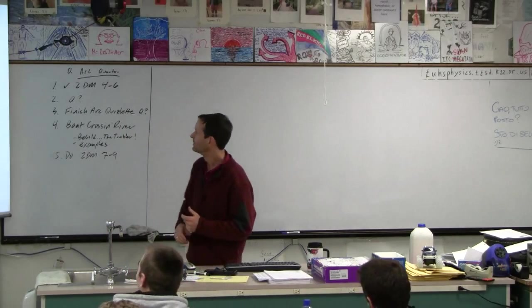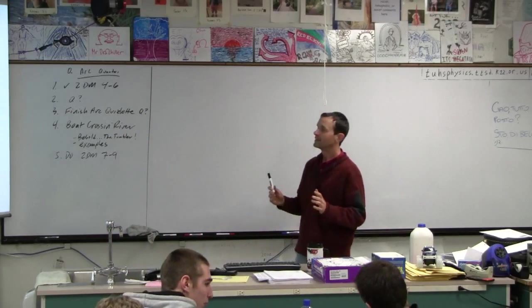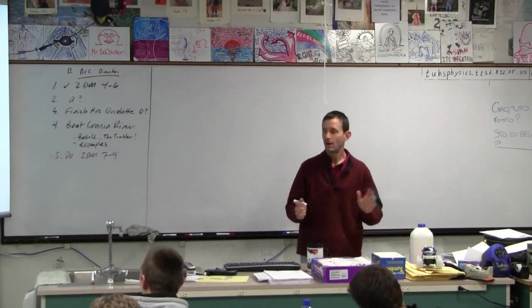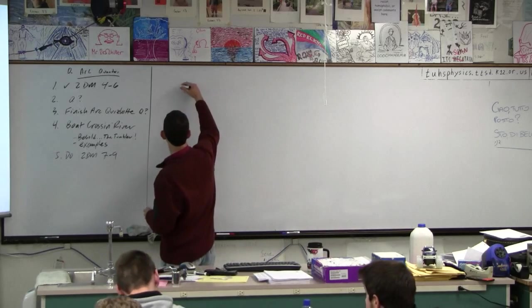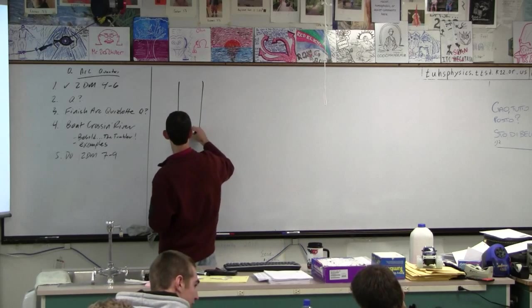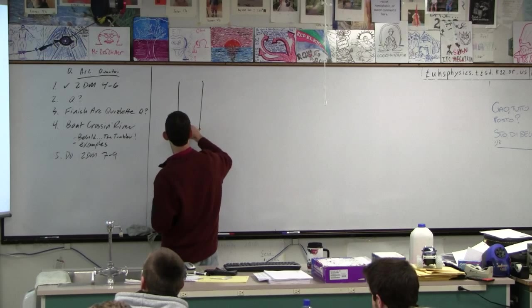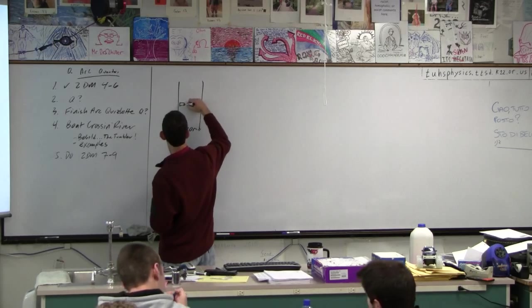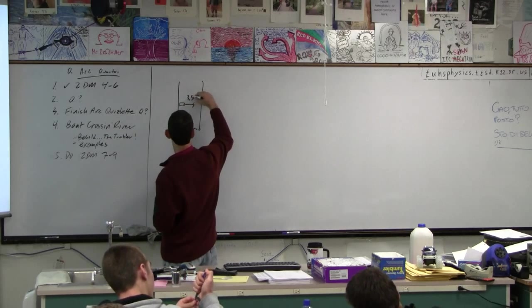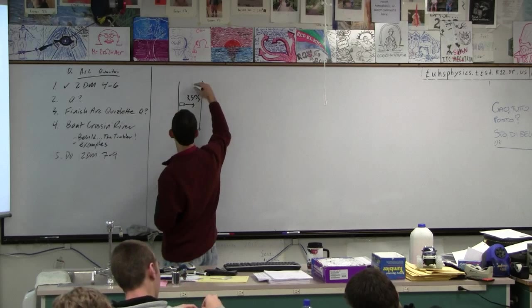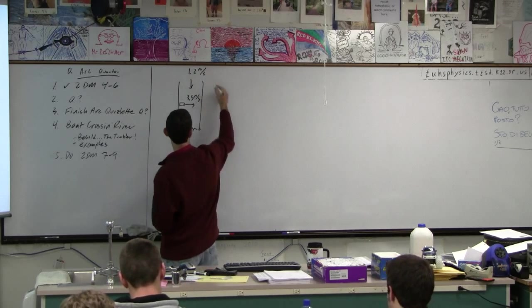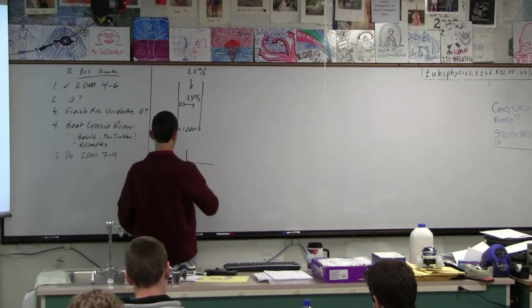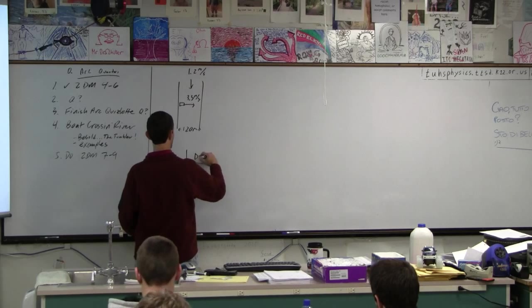Here we go. Okay, so the first one is we're just going to head straight across the river. Here's our river. It is 120 meters across. The boat can go 3.5 meters per second. The current is 1.2 meters per second, and the beautiful thing is that this can be solved entirely by doing across the river and downstream.